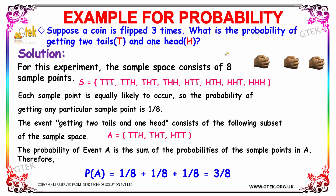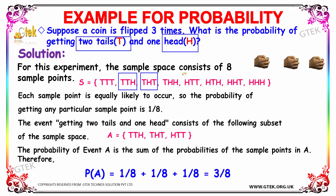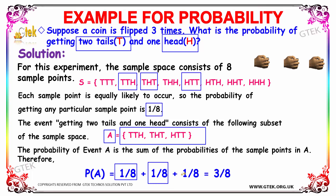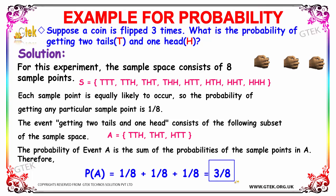As per the question we need to find the probability of getting two tails and one head. Analyzing the sample space, we identify the outcomes with two tails and one head — there are three such events. The probability of event A is the sum of probabilities of the sample points in A, which is 1/8 + 1/8 + 1/8 = 3/8. So the probability of getting two tails and one head is 3/8.